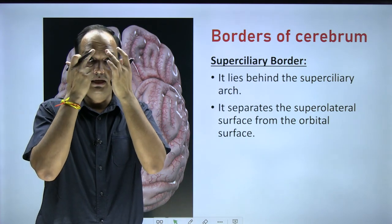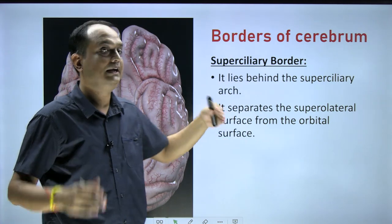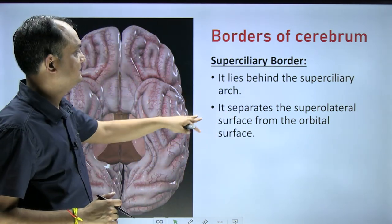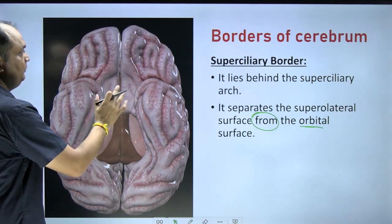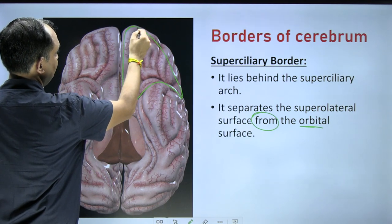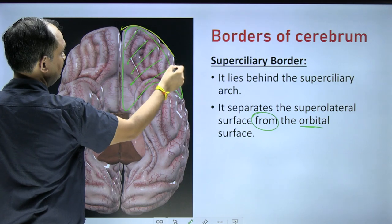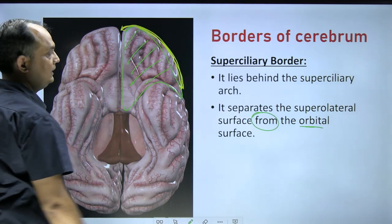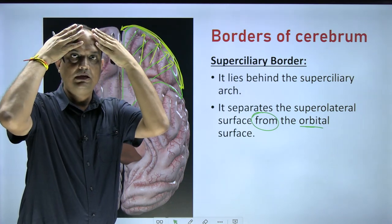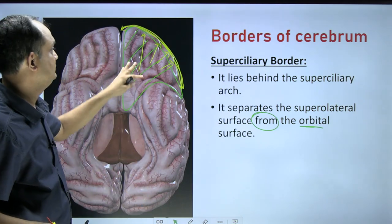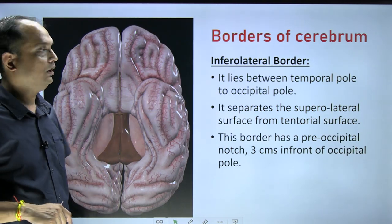The superciliary border lies behind the superciliary arches. It separates the superolateral surface from the inferior surface — specifically from the anterior orbital surface. In the inferior view, this border demarcates the anterior margin of the orbital surface, separating the superolateral surface from the anterior orbital part of the cerebral hemisphere.